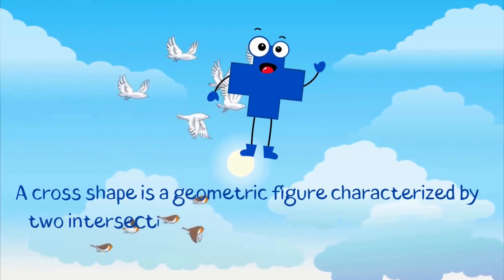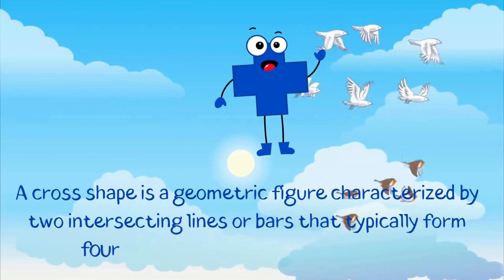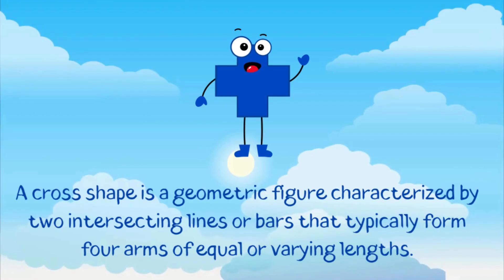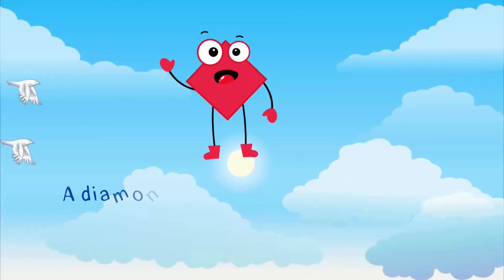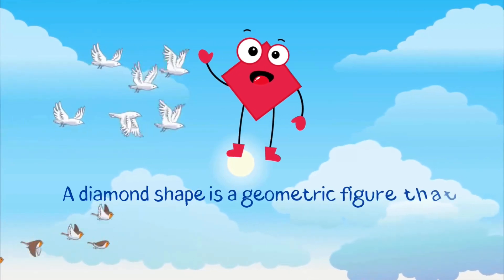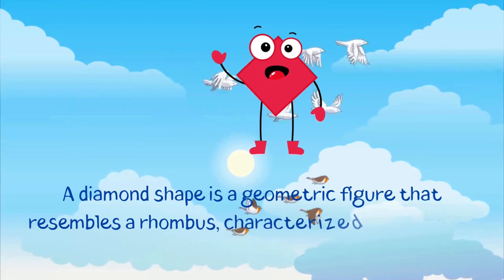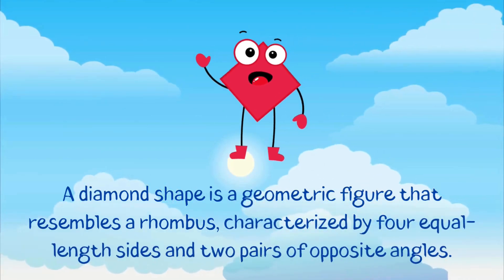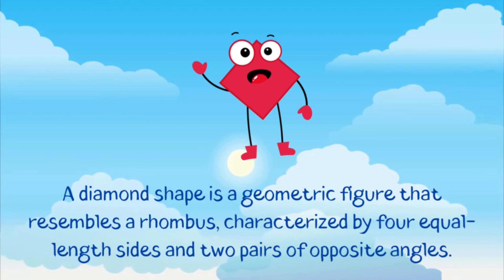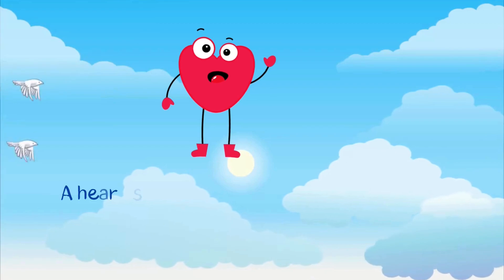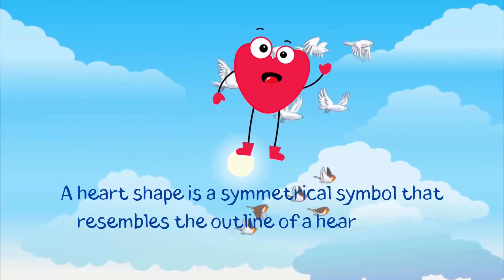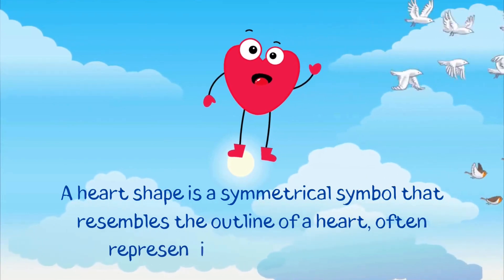A cross shape is a geometric figure characterized by two intersecting lines, or bars, that typically form four arms of equal or varying lengths. A diamond shape is a geometric figure that resembles a rhombus, characterized by four equal-length sides and two pairs of opposite angles. A heart shape is a symmetrical symbol that resembles the outline of a heart, often representing love and affection.